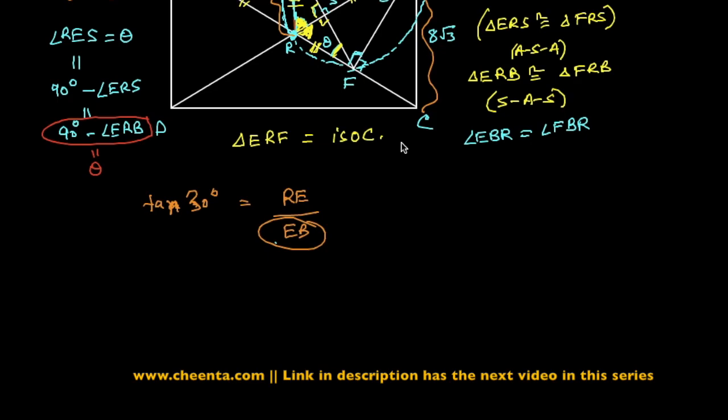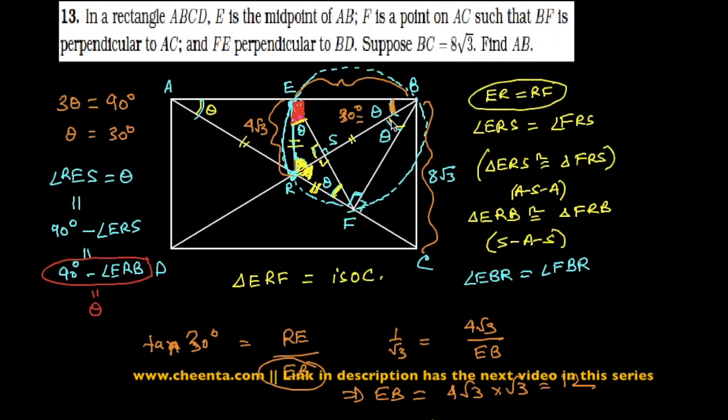So tan of 30 degrees is 1 by square root of 3, and RE is 4 root 3, and EB is what we want to find out. So EB is 4 root 3 times root 3, which is 12. So AB is 24.